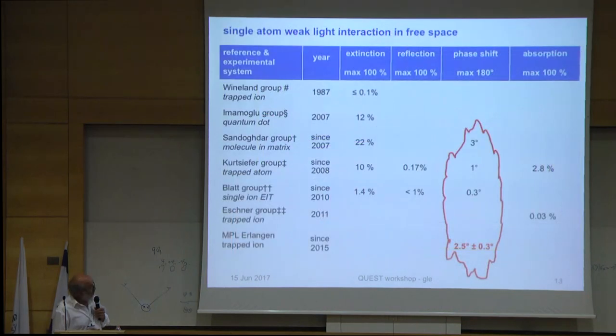For many applications, it's not absolutely necessary to go very close to 180 degrees, but if one would have like 10, 20 degrees, this would already make a lot of experiments possible. Just to show you what other people have done, there is a three degree measurement by Sandoghdar's group. All the others are smaller phase shifts. With our first result, we are very close to the state of the art. We hope to soon go beyond this.